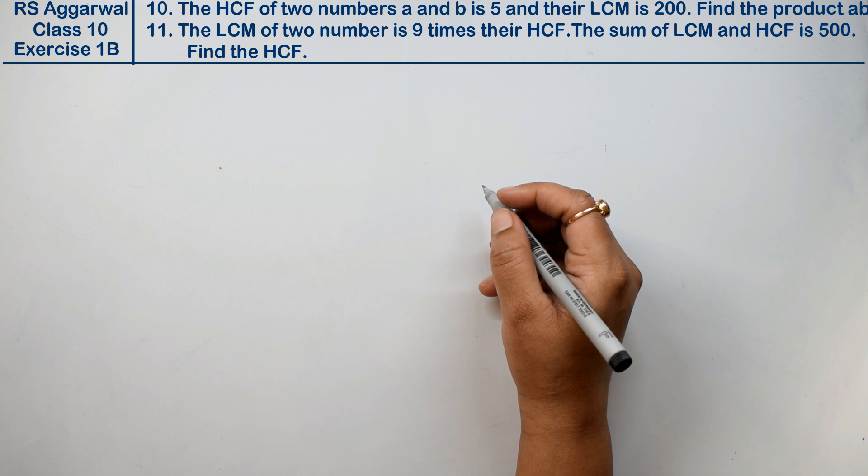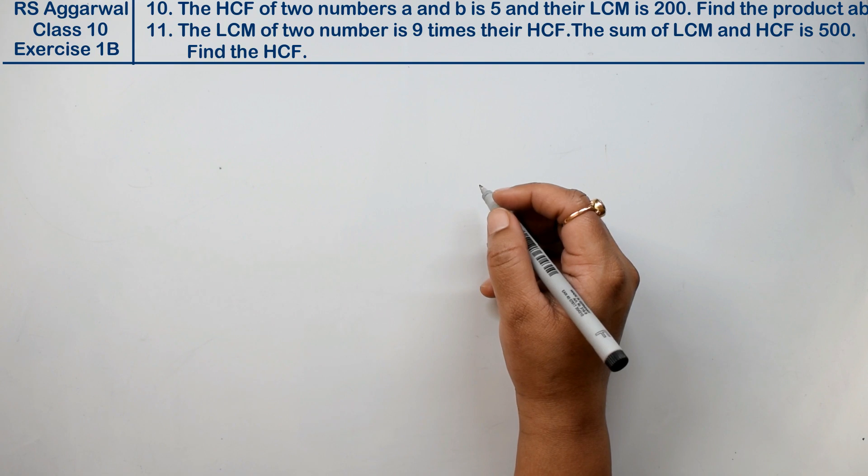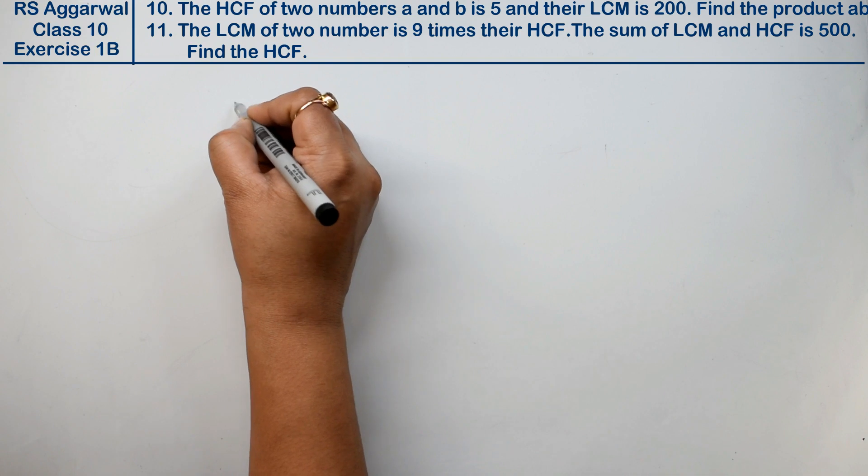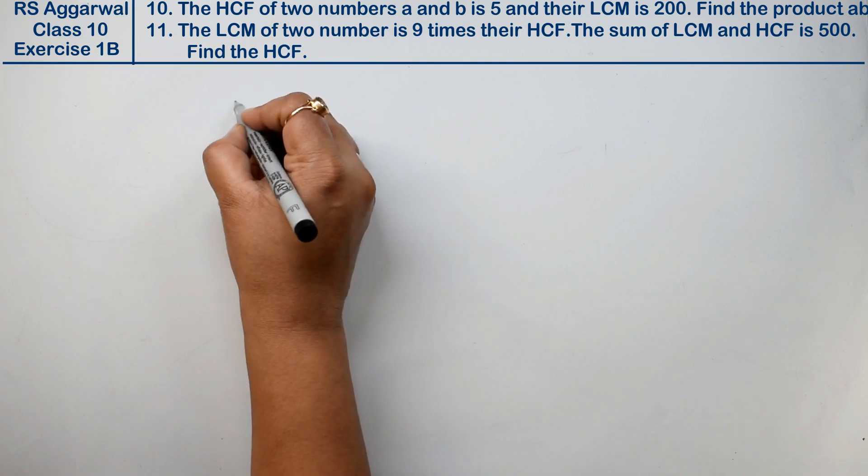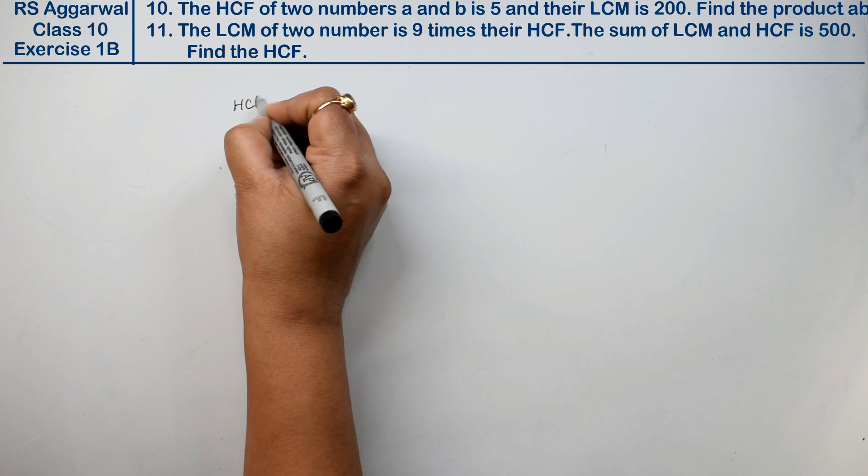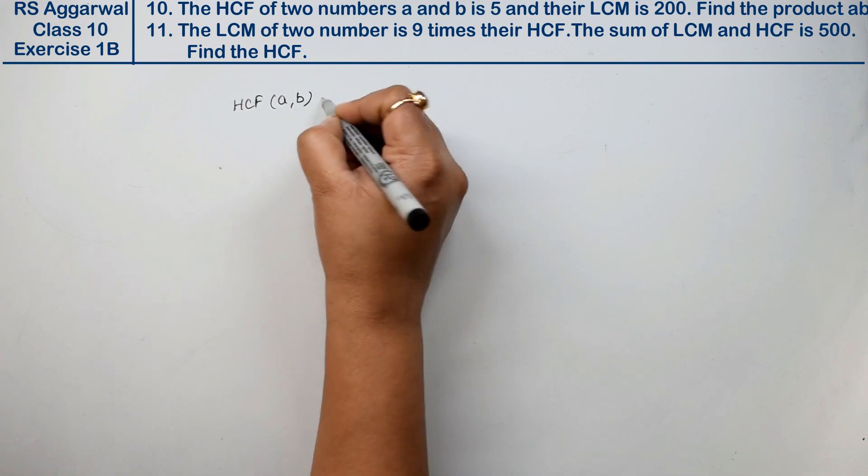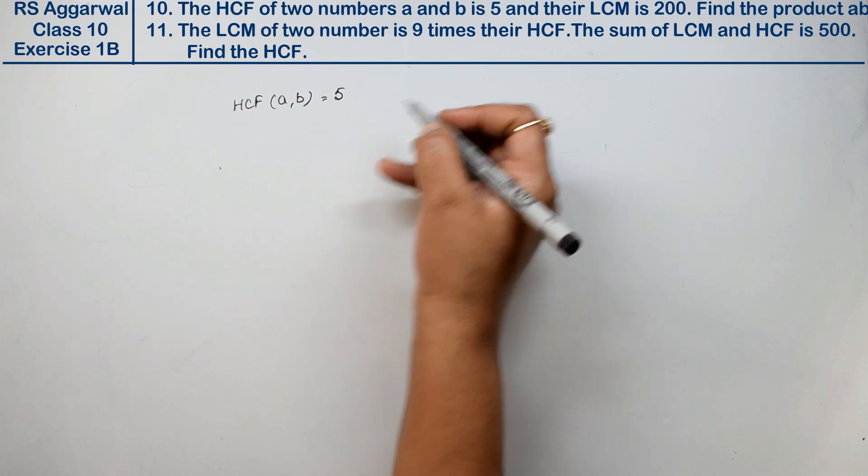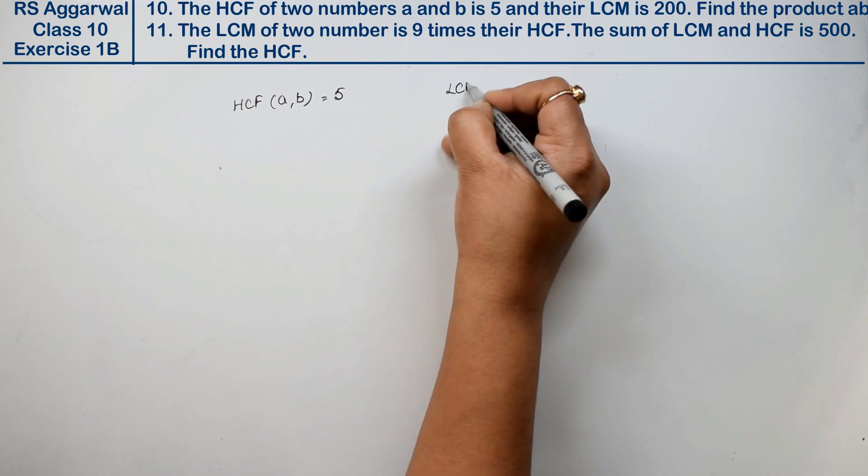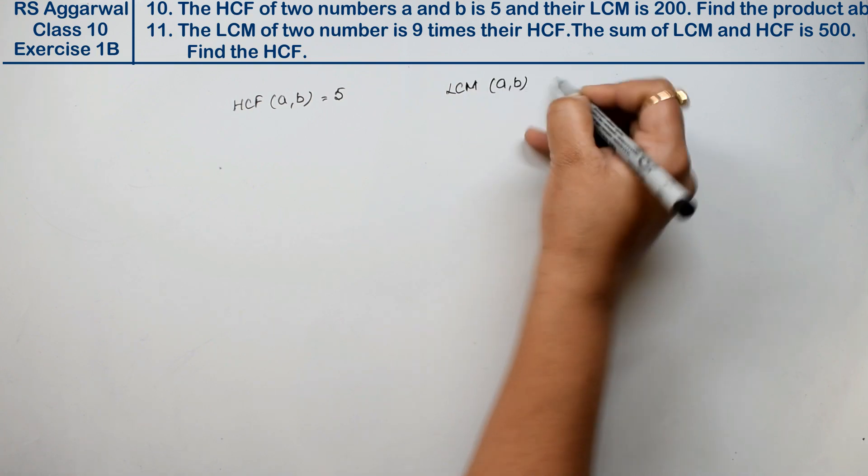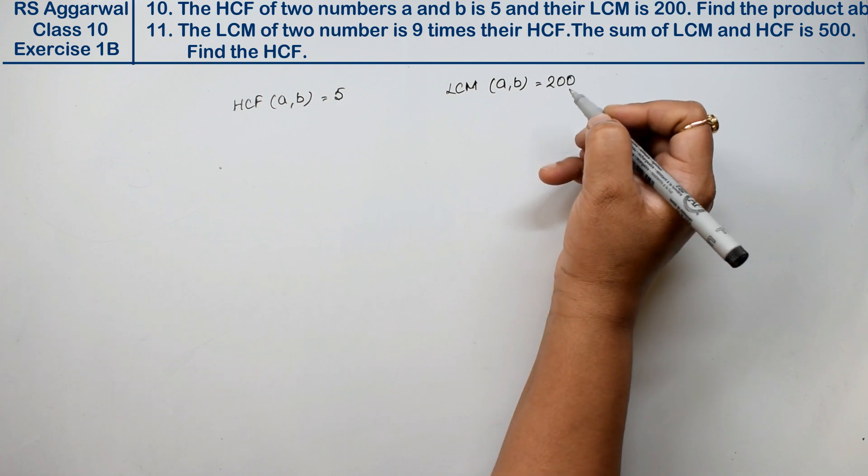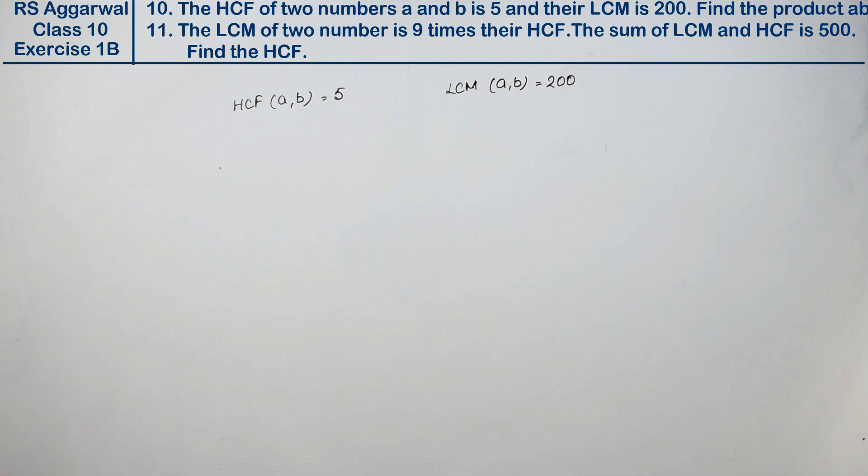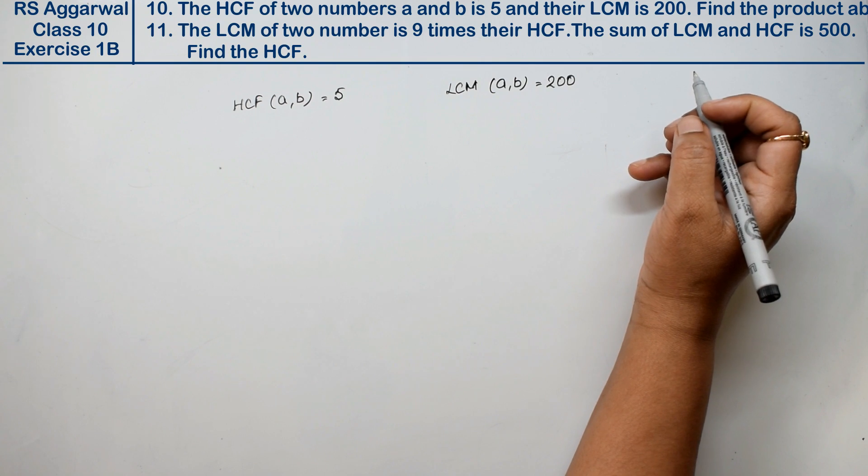Let's do question number 10 of exercise 1B according to 2020 edition. Question number 10 is: the HCF of two numbers a and b is 5 and their LCM is 200. Find the product a and b.